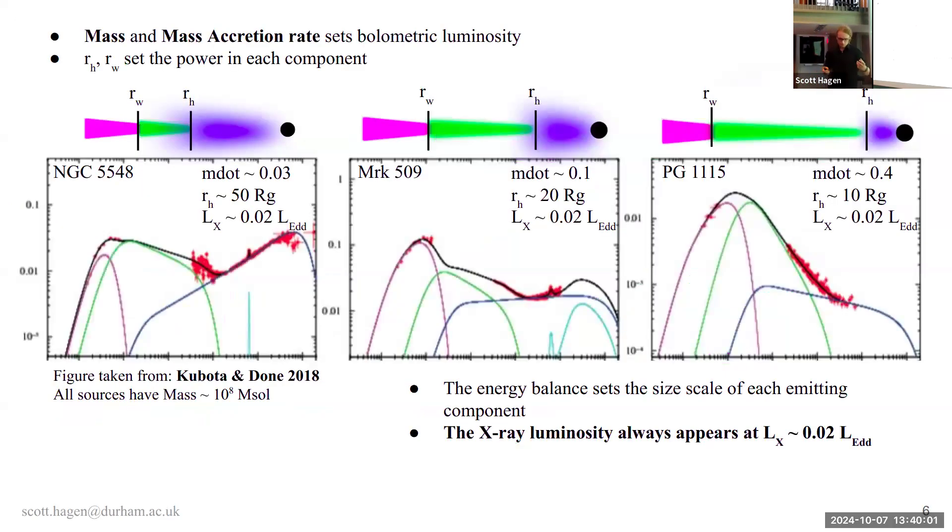Now, these SED models fundamentally depend on the mass and the mass accretion rate or the Eddington ratio. And that sets how much power you have available in the flow to emit. Now, you can put this together, then, into a model which conserves your energy, and for zeroth order, say, okay, there's so much energy available in the flow. Divide my flow into different components, like standard disk, maybe this funky Comptonized disk and X-ray plasma, and then say, okay, based on the size of these components, how much emission am I getting in each bandpass?